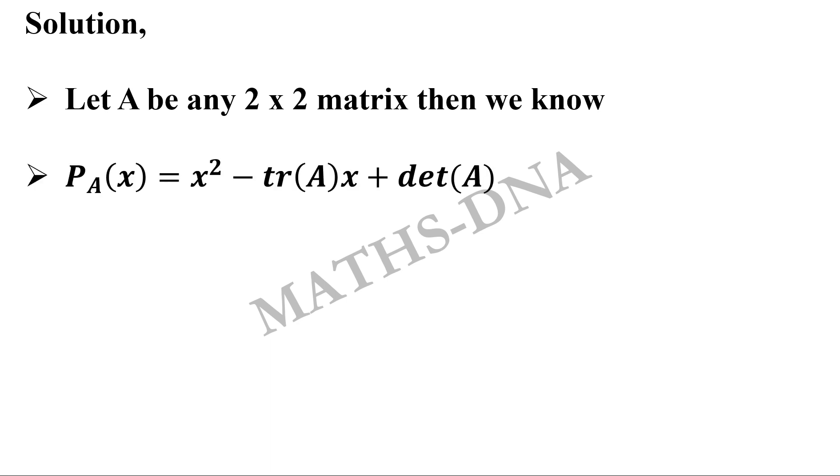Moving on to the solution. We know that for a 2×2 matrix the characteristic polynomial can be directly found. There is a shortcut method: P_A(x) equals x² minus tr(A)x plus det(A). Similarly for A inverse.